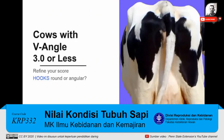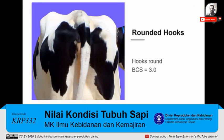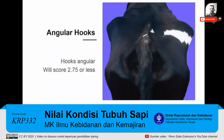We'll start with the thinner group and refine the score of 3 or less. From the back of the cow, take a close look at the hip bones or hooks — are they round or angular? If the hooks are rounded, the cow receives a body condition score of 3.0. If the hooks are angular, the cow will receive a body condition score of 2.75 or less, and we move on to the next step.